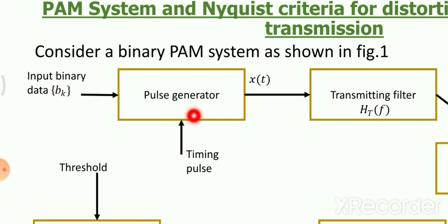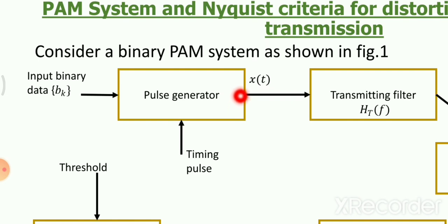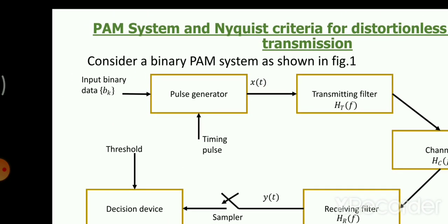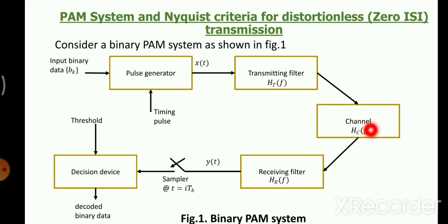In the binary PAM system: binary bits go through a pulse generator producing rectangular pulses. Many such pulses combine with a certain line code to form the transmitted signal x(t). This passes through a transmission filter, then the channel, and then a receiving filter. Even under a noiseless channel condition, you can still have distortion due to the rectangular pulse shape.